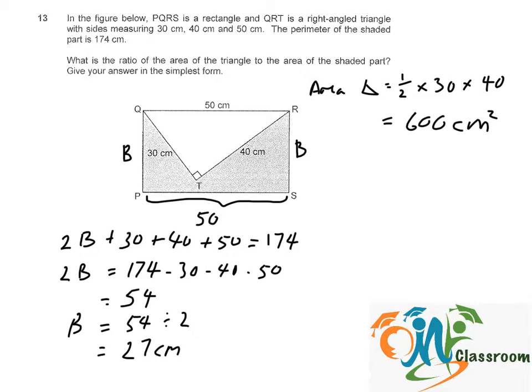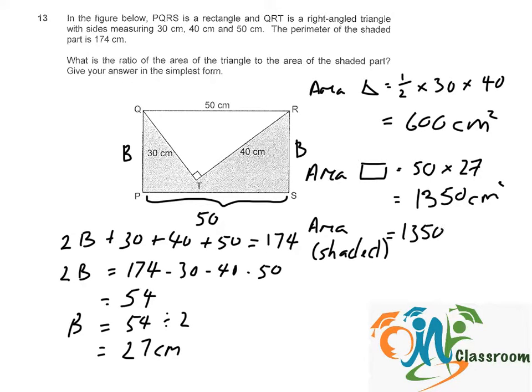To find the area of the shaded part, we need to find the area of the rectangle first. That will be 50 times 27, which is 1350 cm². The area of the shaded part is 1350 minus 600, which gives us 750 cm². So the ratio of the area of the triangle to the area of the shaded part will be 600 to 750.